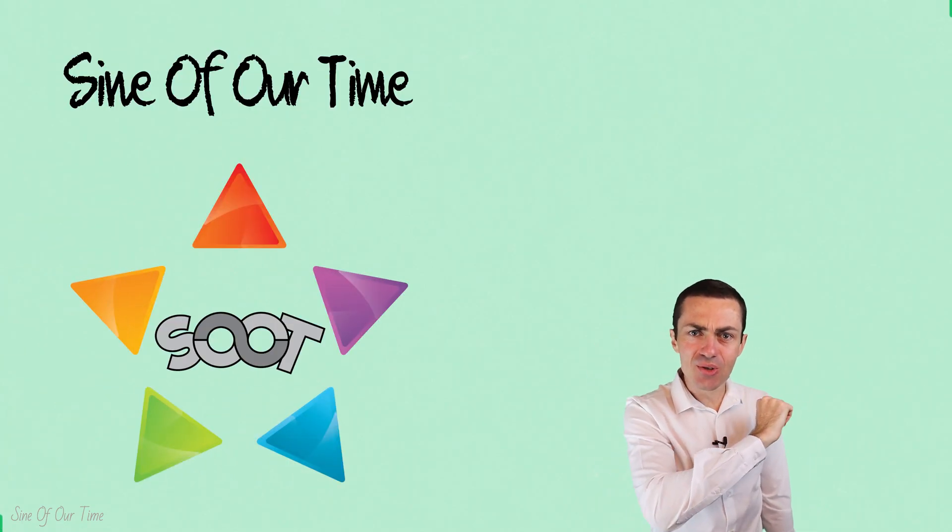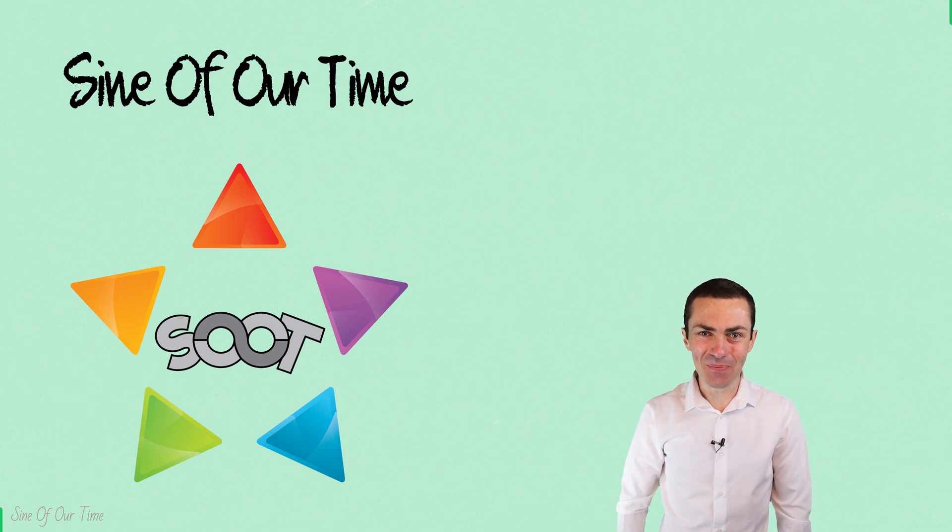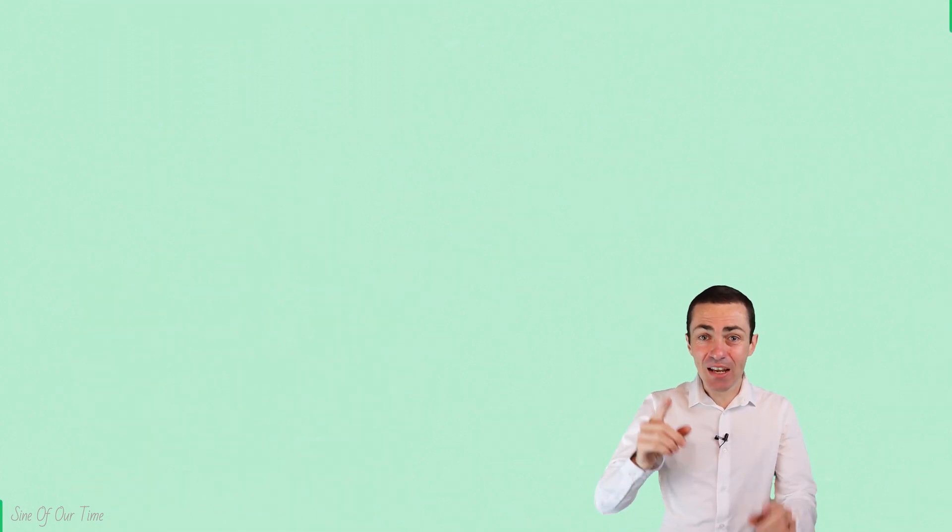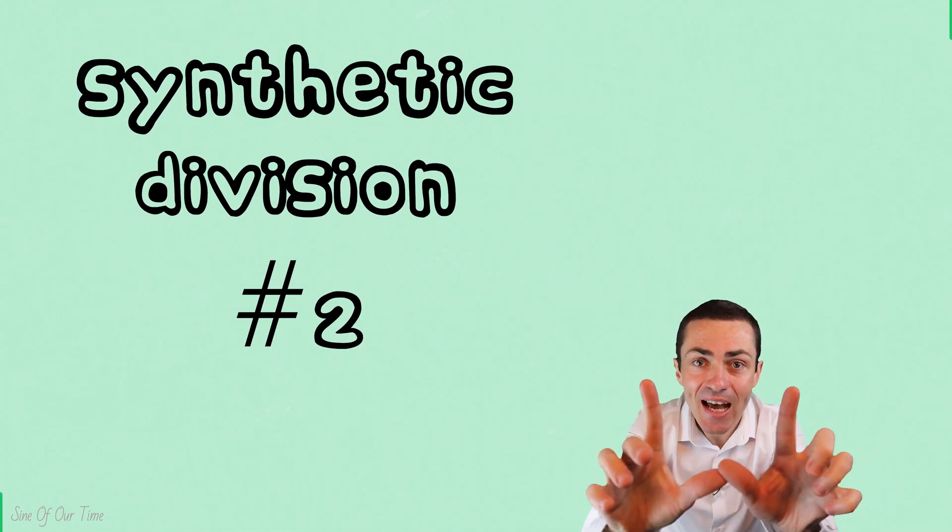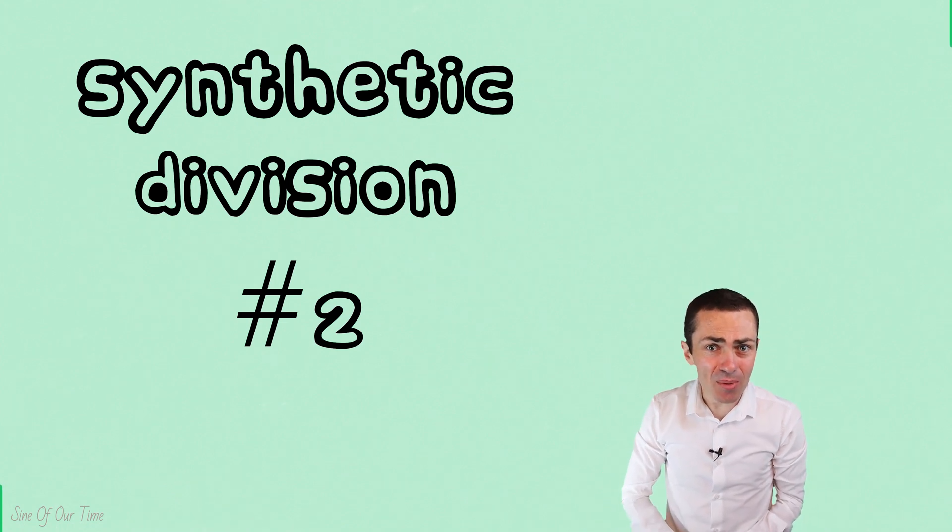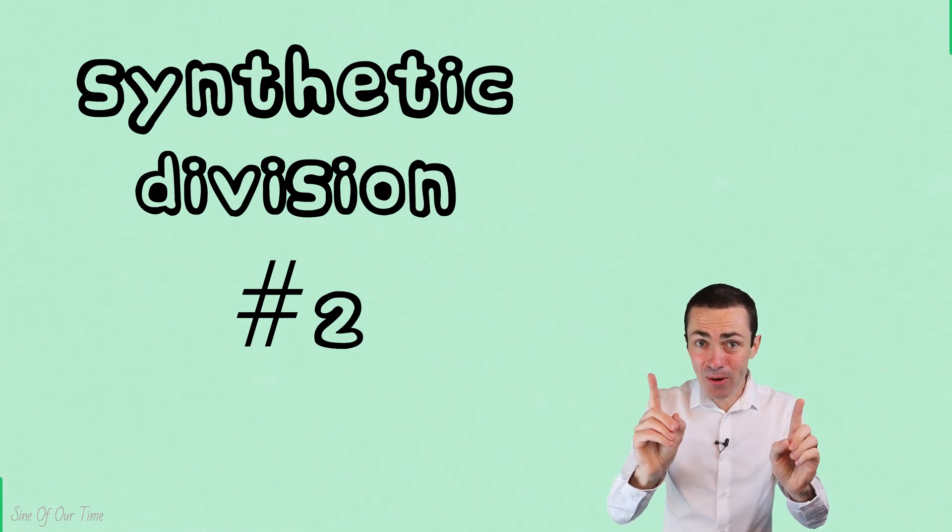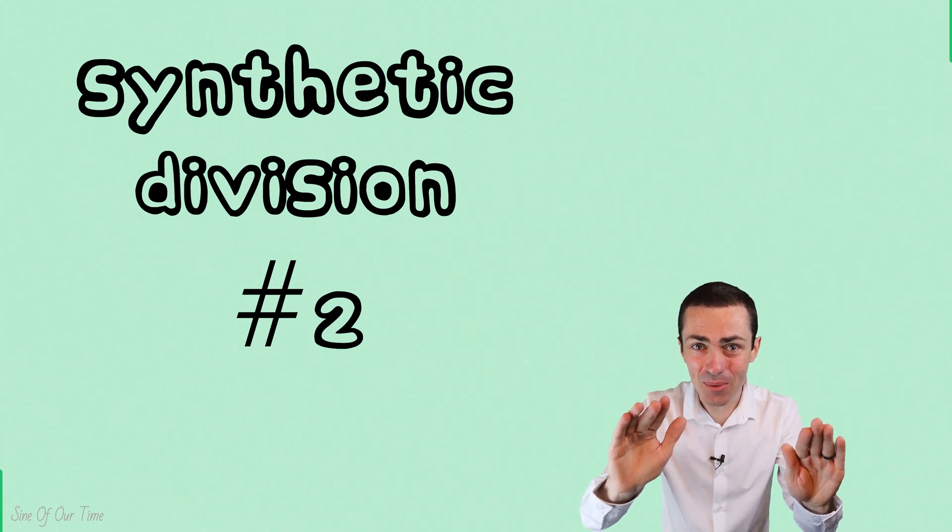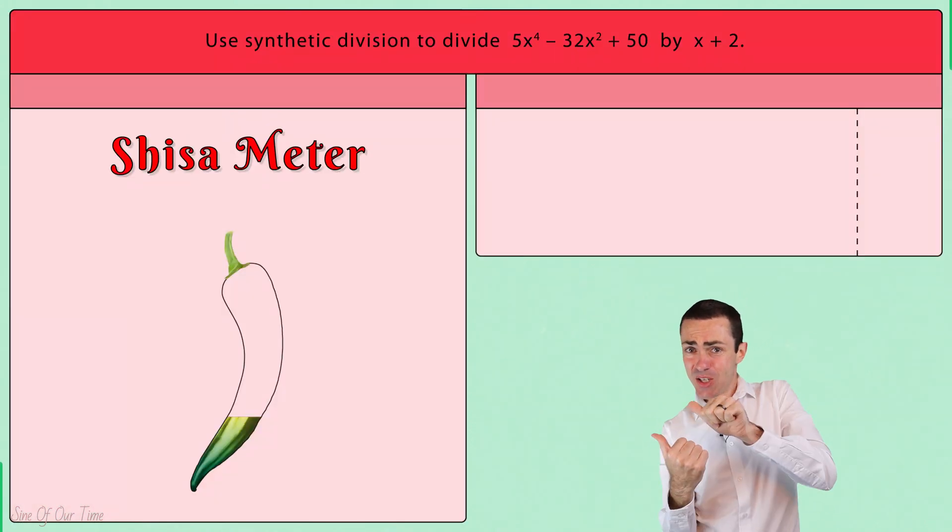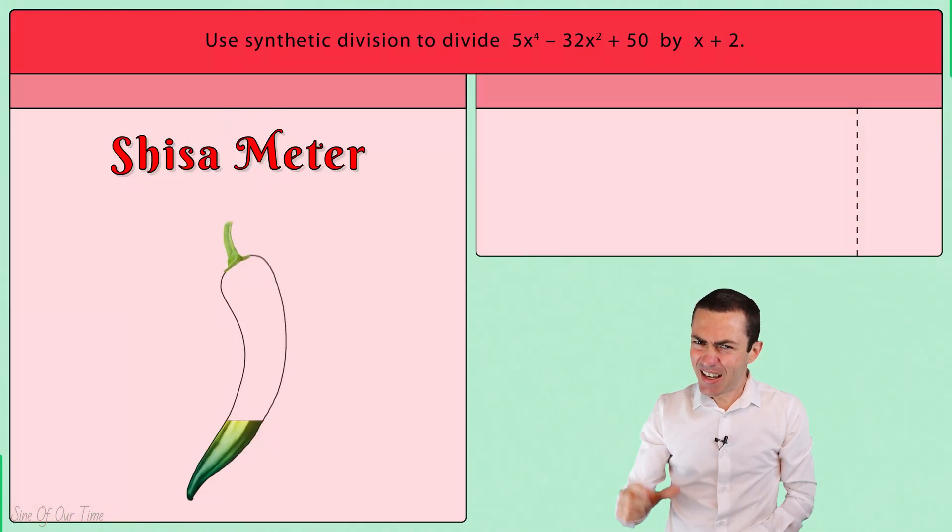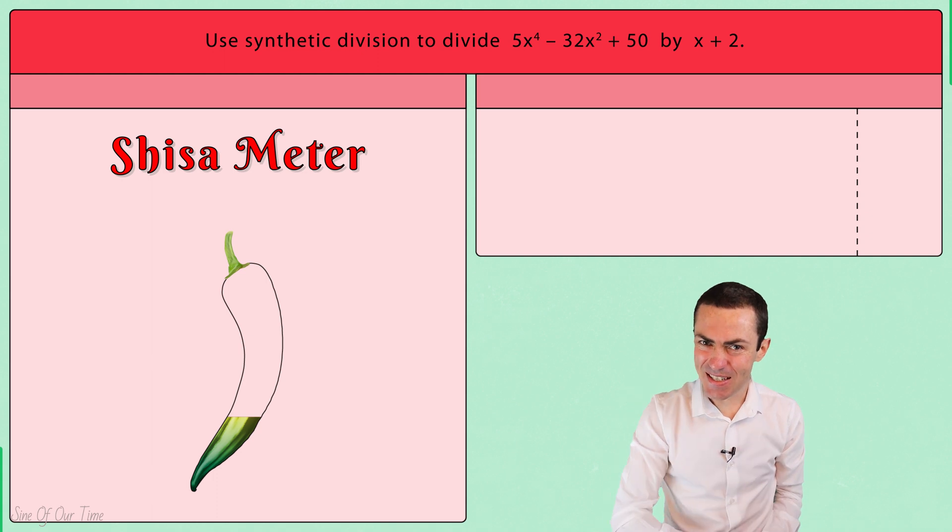Hello everyone and welcome to Sign of Our Time. My name is Bruce and today I want to dive into a synthetic division problem in which there are certain powers of X that are missing from the dividend, which as we can see from the Shisa meter is just a tad bit spicy.